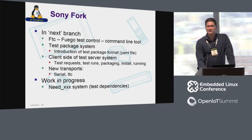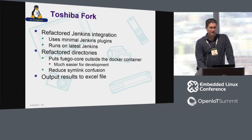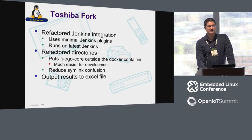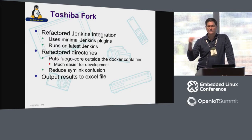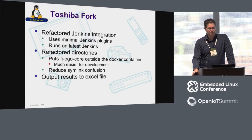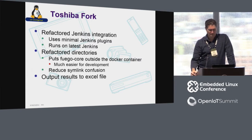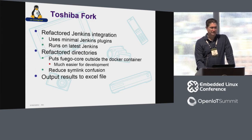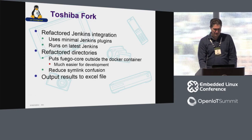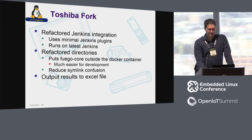Some of the work in progress is a new test dependency system. In the Toshiba fork, being worked on by Daniel Sangarin, there's a refactored Jenkins integration. This has been a big issue — we have a static version of Jenkins that's baked in right now. This fork uses minimal Jenkins plugins to make it easy to use the latest Jenkins version, and it actually does run on the latest Jenkins. It also refactored the directories somewhat, puts the Fuego core directory outside of the container and volume mounts it in, which is much easier for development. There was also some work on outputting results to Excel files.